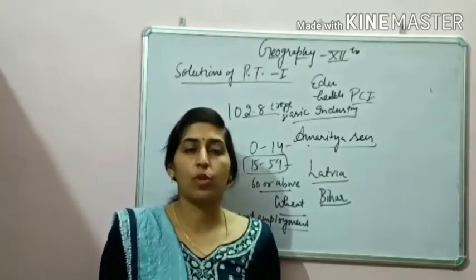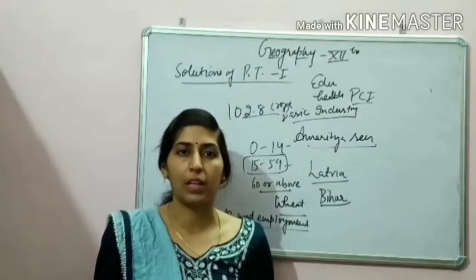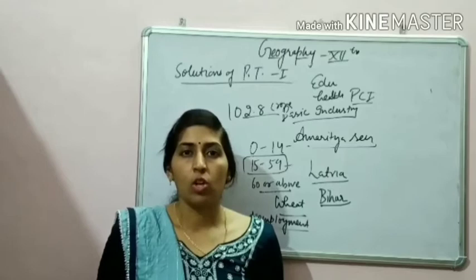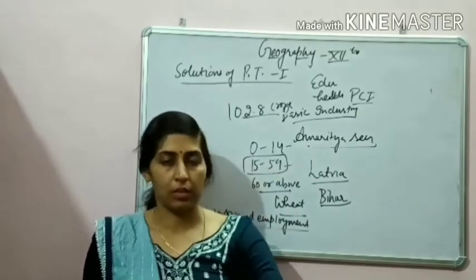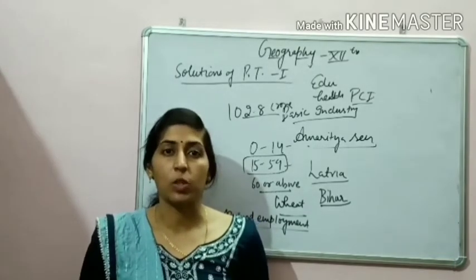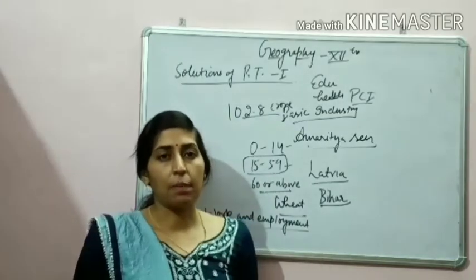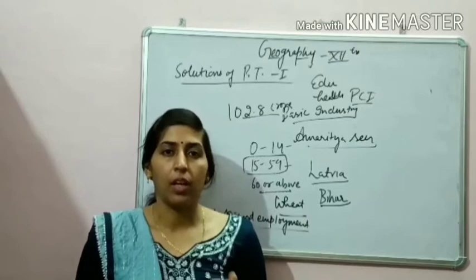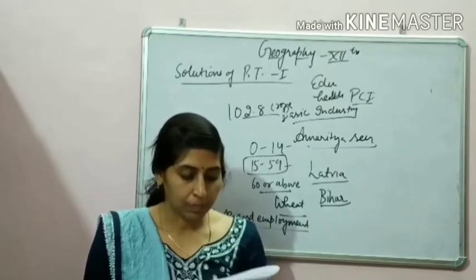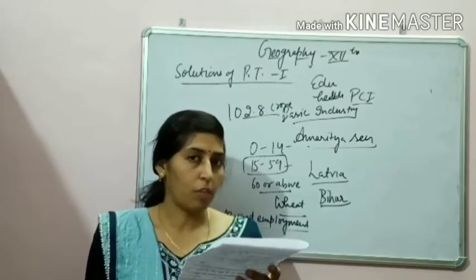The next question: what are three factors that affect the distribution of population? You could write availability of water, climate, and relief. People prefer to live where the climate is neither too cold nor too hot. Where water is available, civilizations begin near rivers. And in comparison to plateaus, hills, and mountains, population distribution is higher in plains.